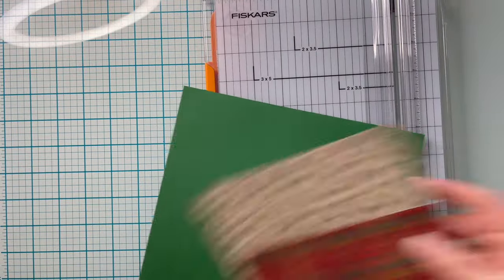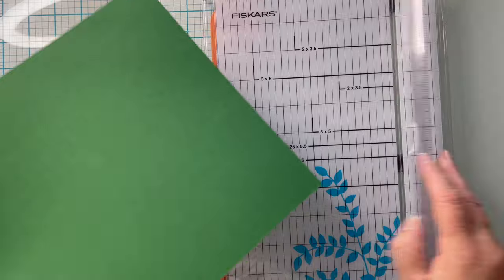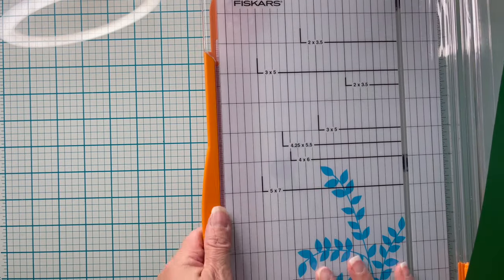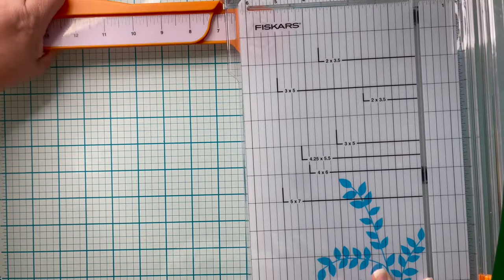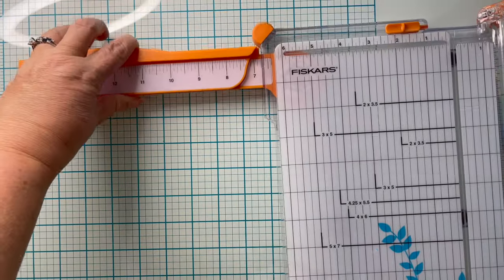I am using my Fiskars Deluxe Shortcut paper trimmer to cut down my card base. All of these instructions are available to you on a PDF that you can download in the description box.